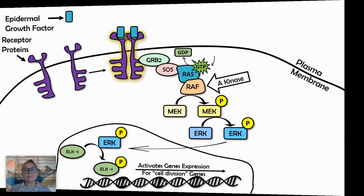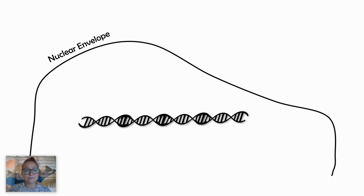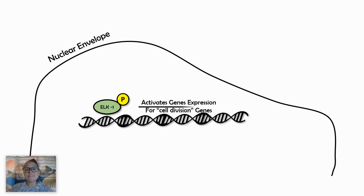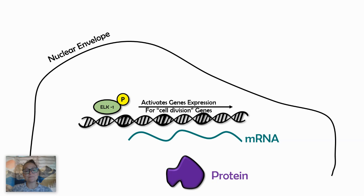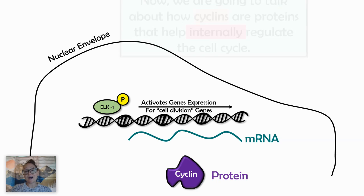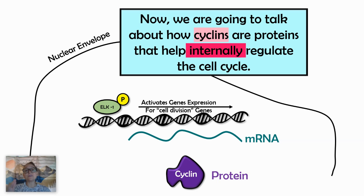Let's zoom into the nucleus. When we talk about the cell response of a growth factor and turning on genes, we have an enzyme called RNA polymerase that will transcribe or read a gene in DNA and copy it into messenger RNA — those are the directions for how to make a protein. The protein we're going to be talking about here are cyclins, which are used to internally regulate the cell cycle.